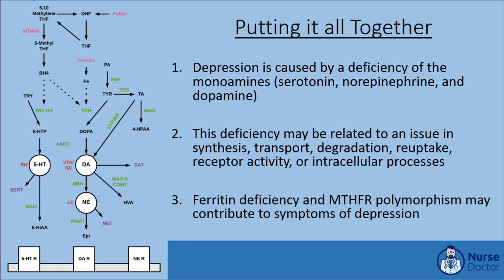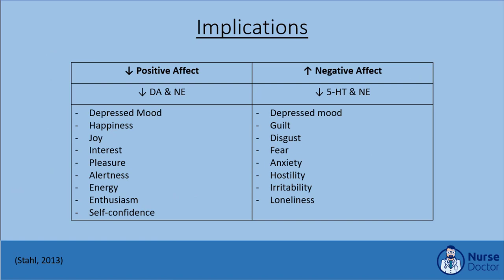According to the monoamine hypothesis of depression, depression is caused by a deficiency of the monoamines serotonin, norepinephrine, and dopamine. This deficiency may be related to an issue in the synthesis, transport, degradation, reuptake, receptor activity, or intracellular processes surrounding the monoamines. Ferritin deficiency and MTHFR polymorphism may influence the synthesis of monoamines and therefore may contribute to the symptoms of depression. Based on the known functions of the key monoamines, phenotypes of depression can be identified: a global decrease in positive affect correlates with dopamine and norepinephrine deficiency, while a global increase in negative affect correlates with serotonin and norepinephrine deficiency.